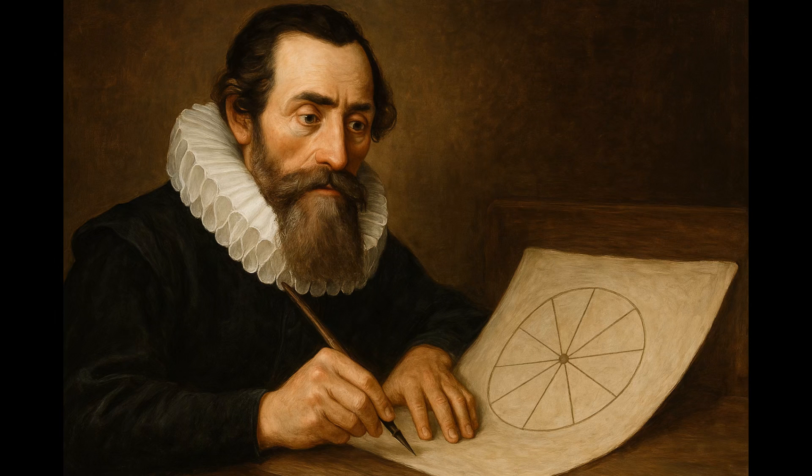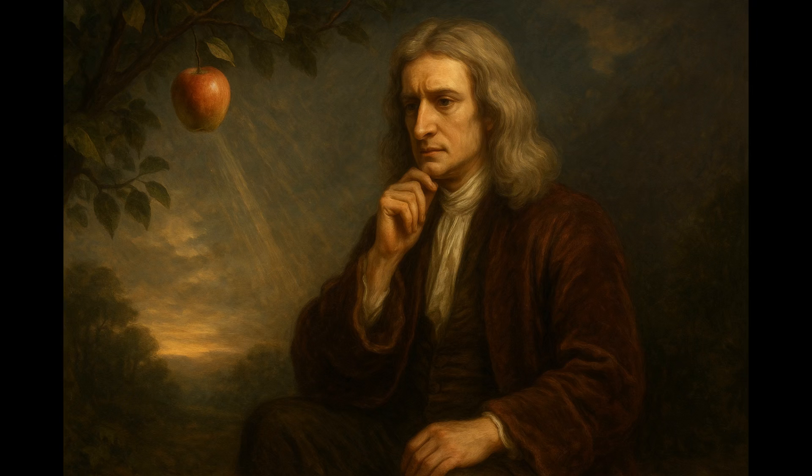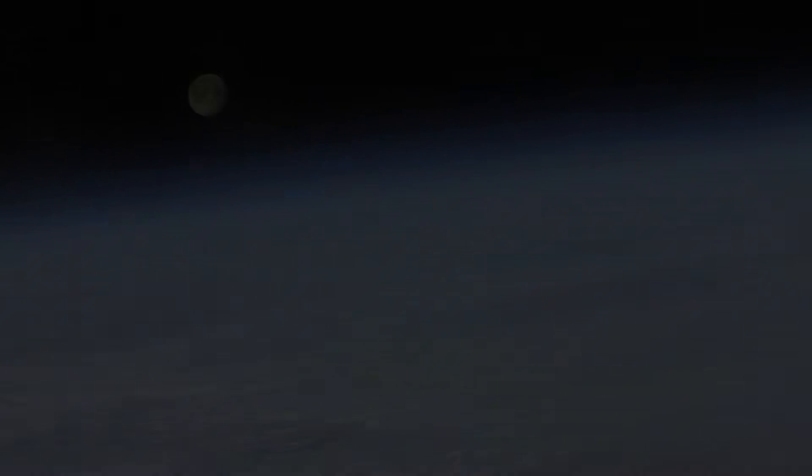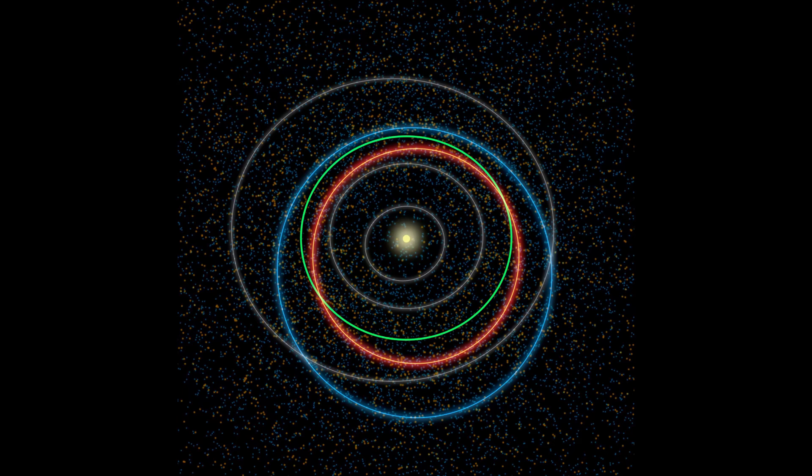Years later, Isaac Newton came along. He united heaven and earth with a single idea. The force that makes the apple fall is the same force that keeps the moon in its orbit. With his law of gravity, Newton showed that every object attracts every other, with a force that depends on its mass and decreases with the square of the distance. The universe suddenly was predictable.